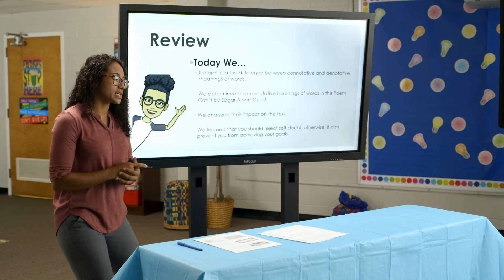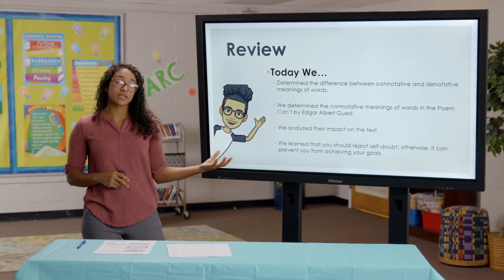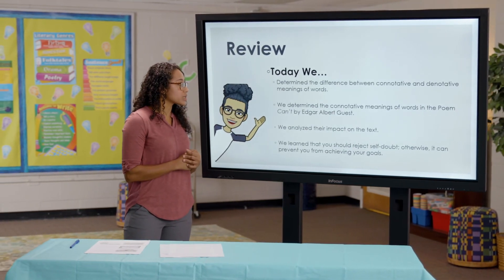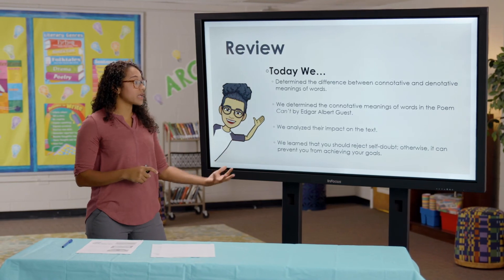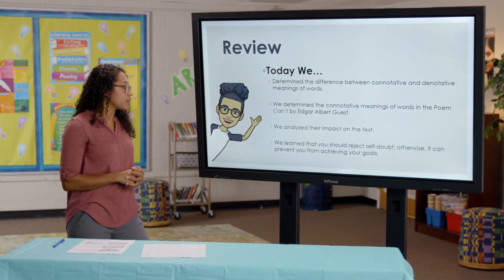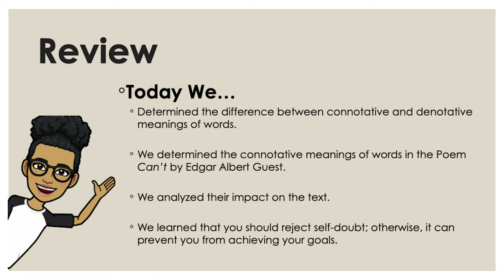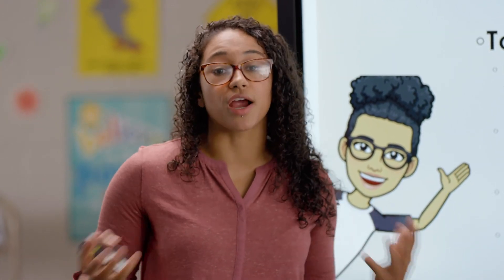Let's review what we did today. We determined the difference between connotative and denotative meanings of words. We determined the connotative meanings of words in the poem 'Can't' and analyzed their impact in the text. We learned that you should reject self-doubt, otherwise it can prevent you from achieving your goals. Hopefully you're a lot more comfortable looking at powerful words and figuring out their impact on the text. Thank you so much for learning with me today — I can't wait to see you back here for our next lesson.